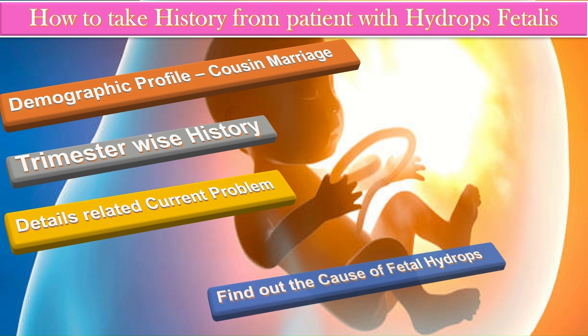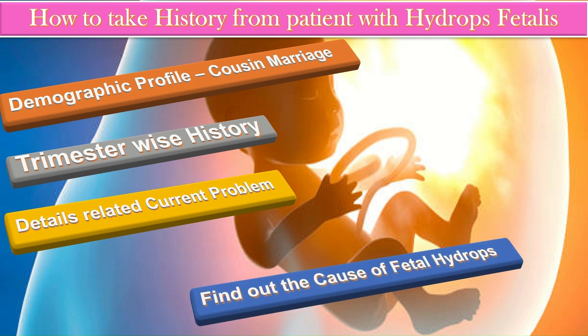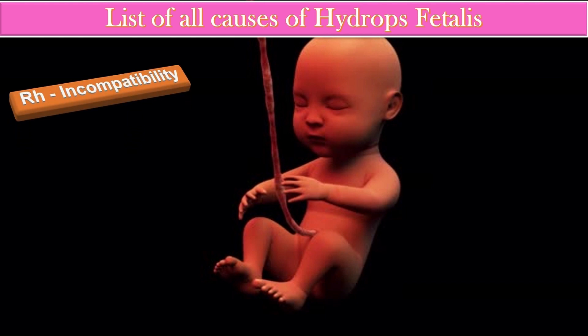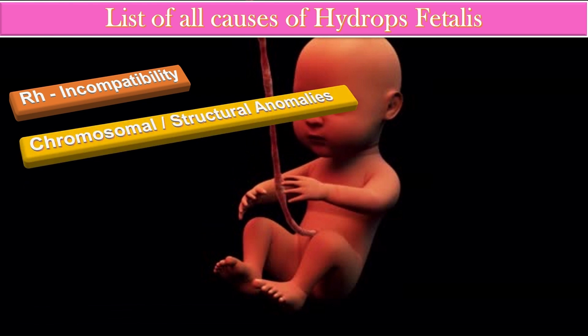To find the cause of hydrops fetalis, first rule out Rh incompatibility by asking about the patient's blood group, the husband's blood group, history of anti-D injection in any pregnancy or after delivery, history of intrauterine transfusion or postnatal transfusion, and any early neonatal death due to jaundice. To detect chromosomal or structural anomalies, ask about consanguineous marriages, previous or family history of abnormal babies, and review the anomaly scan report.